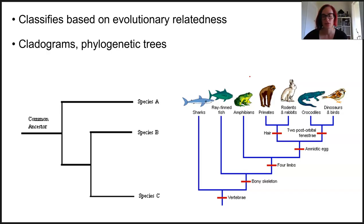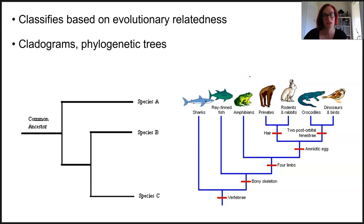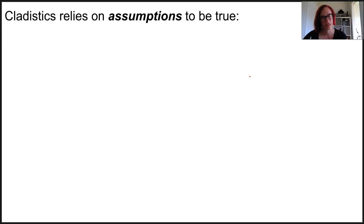Because we use a variety of evidence to create these images, some of them can be considered contentious or even disputed. Depending on what evidence is used, they can be created differently. In order for cladistics to be effective as a method of classification, we have to make some assumptions.